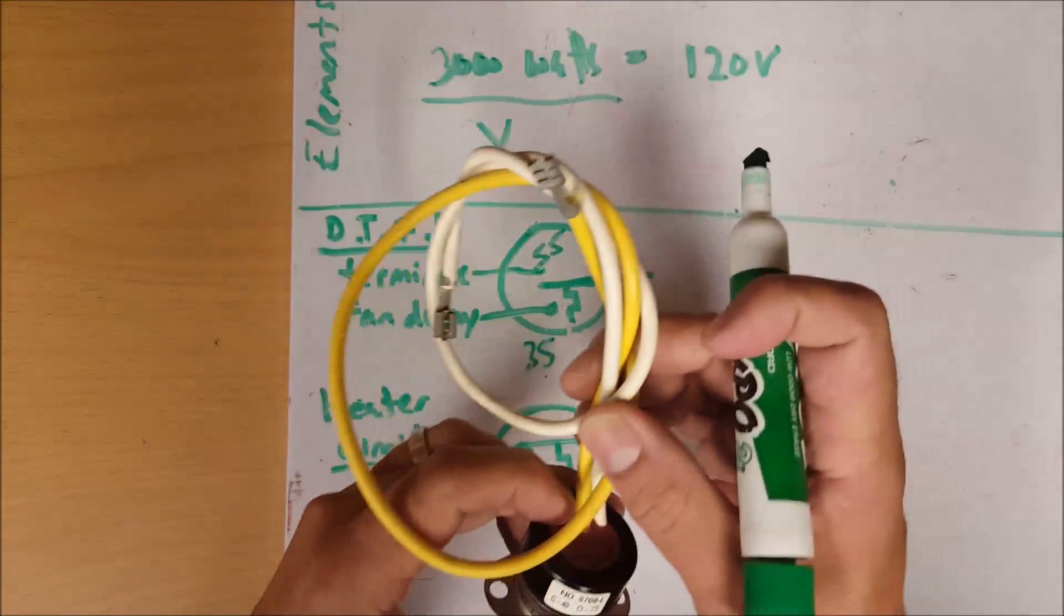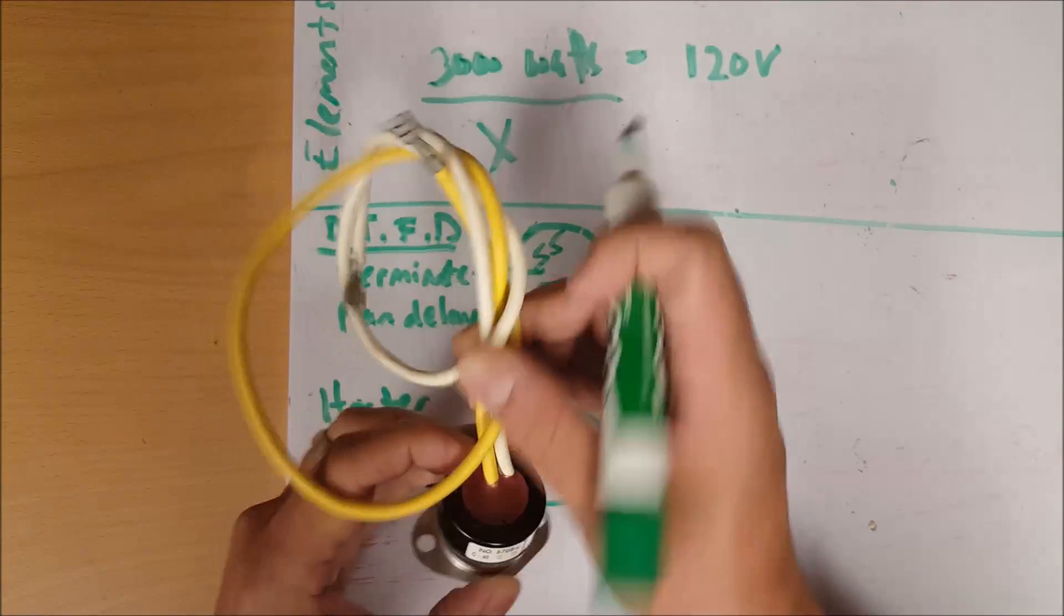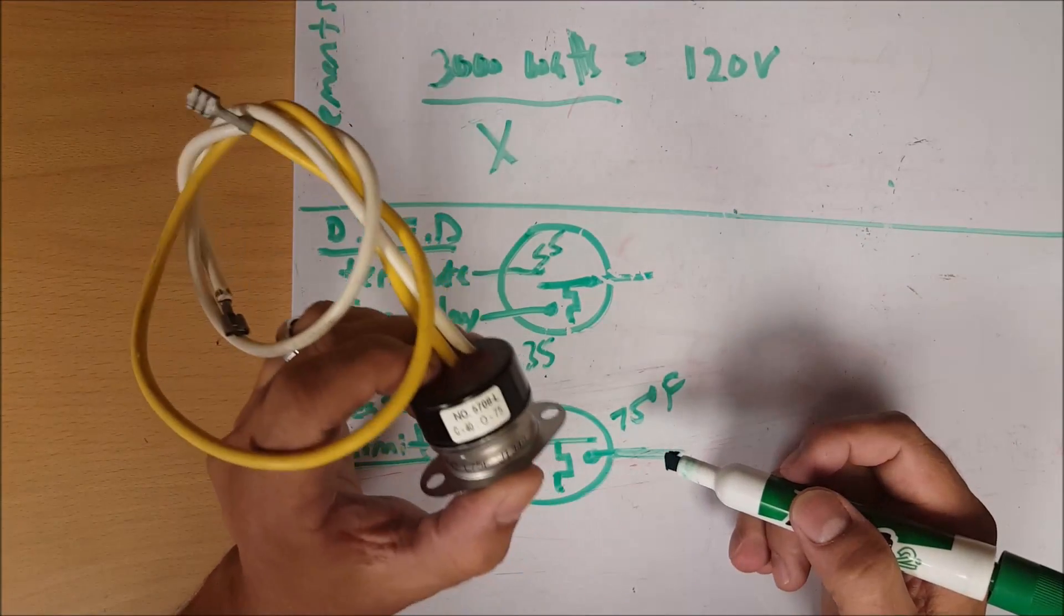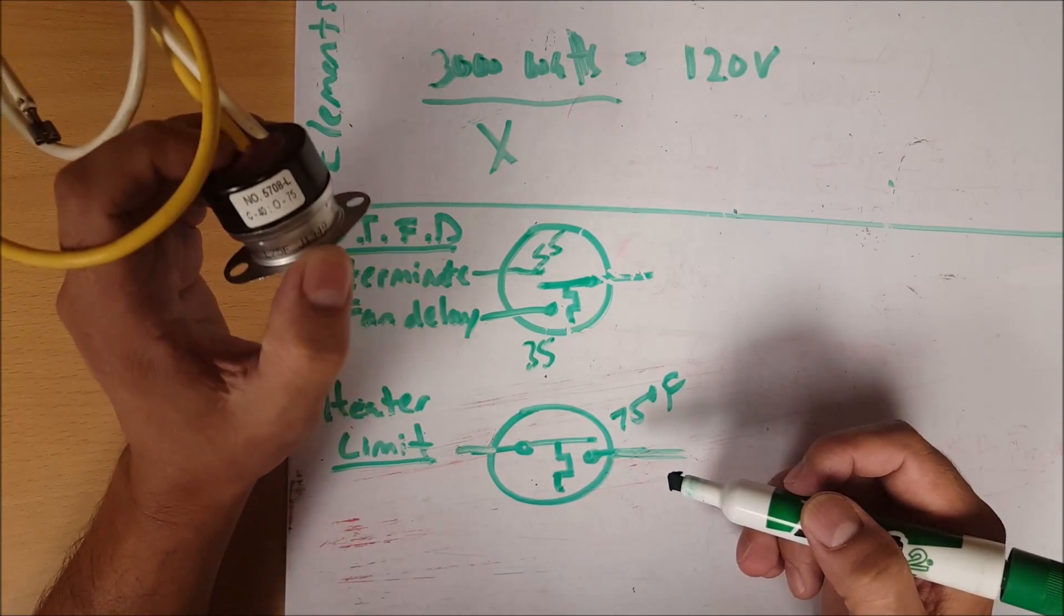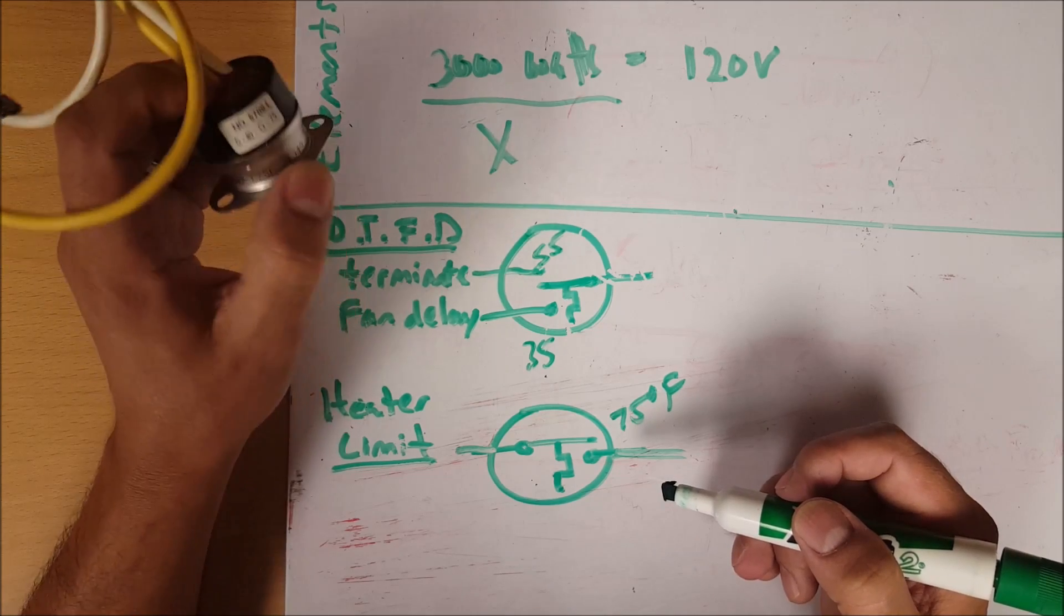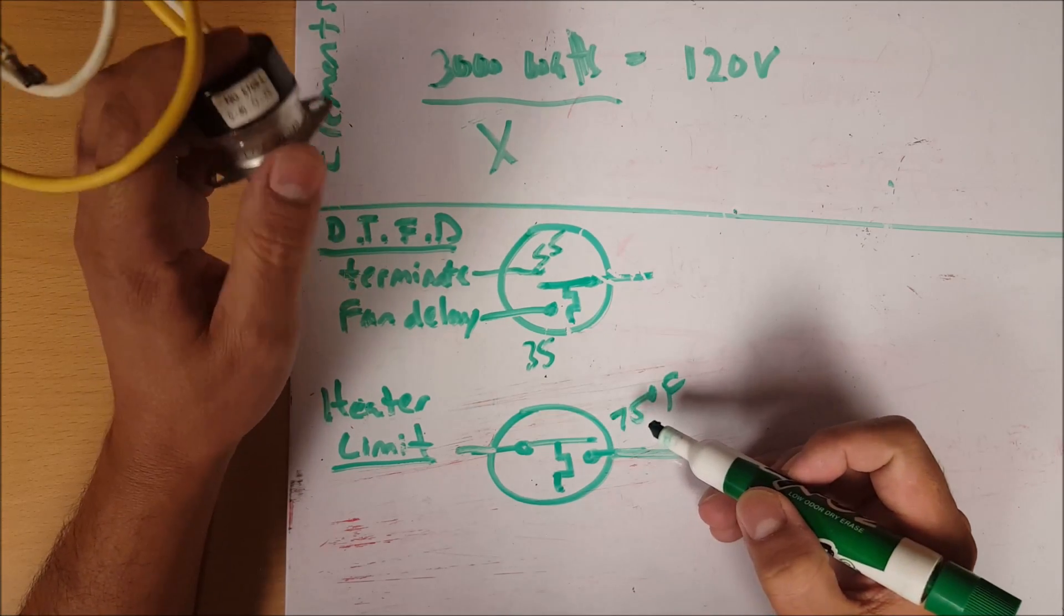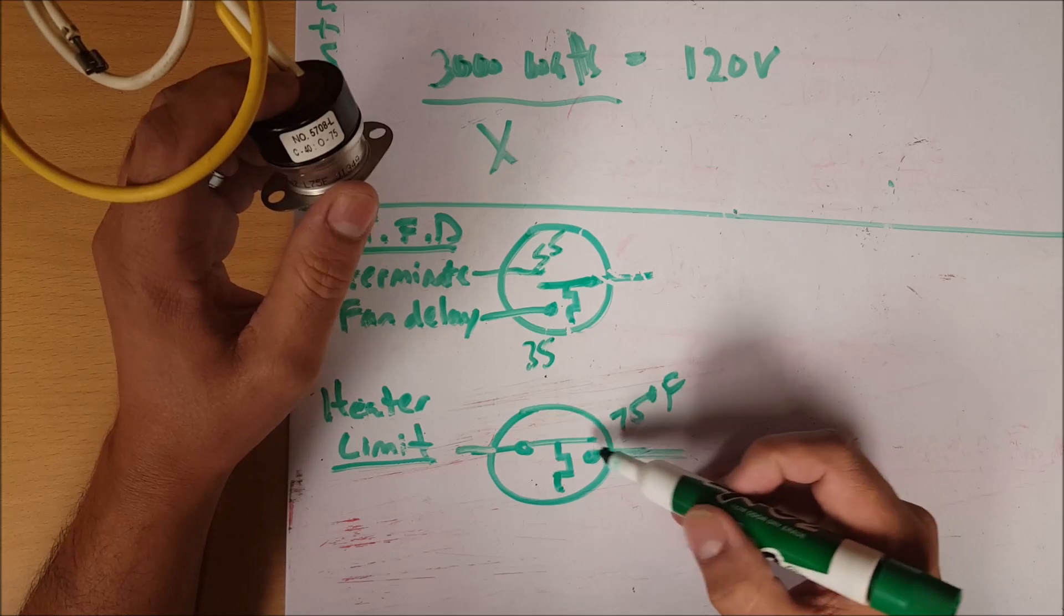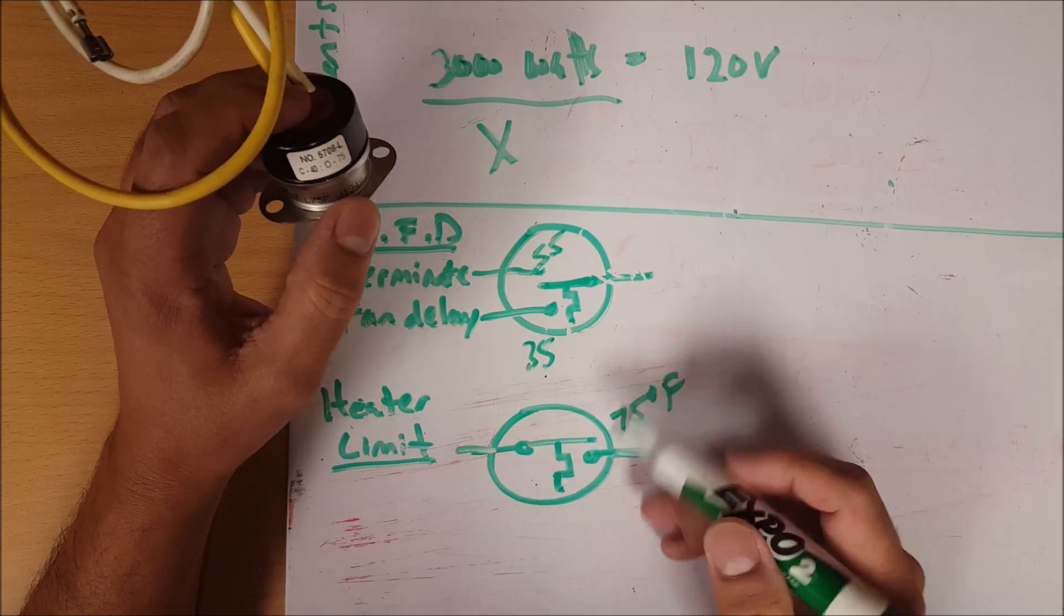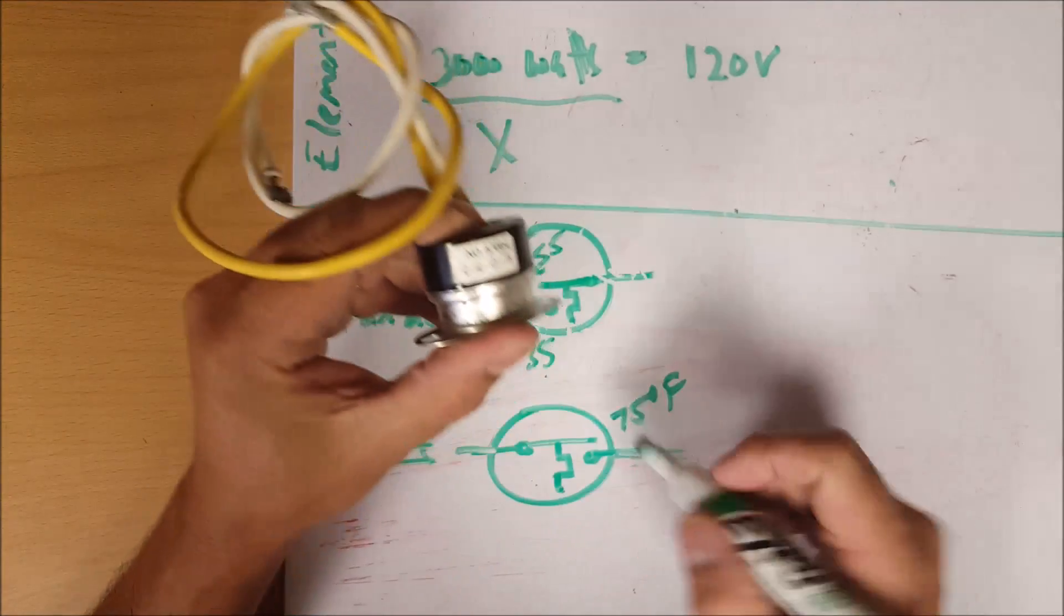These wires are in series with the heater power. So once this breaks open, your heaters are no longer energized, and that's a good thing especially if it's getting above this 75 degree mark. This switch will reset or reclose at 40.